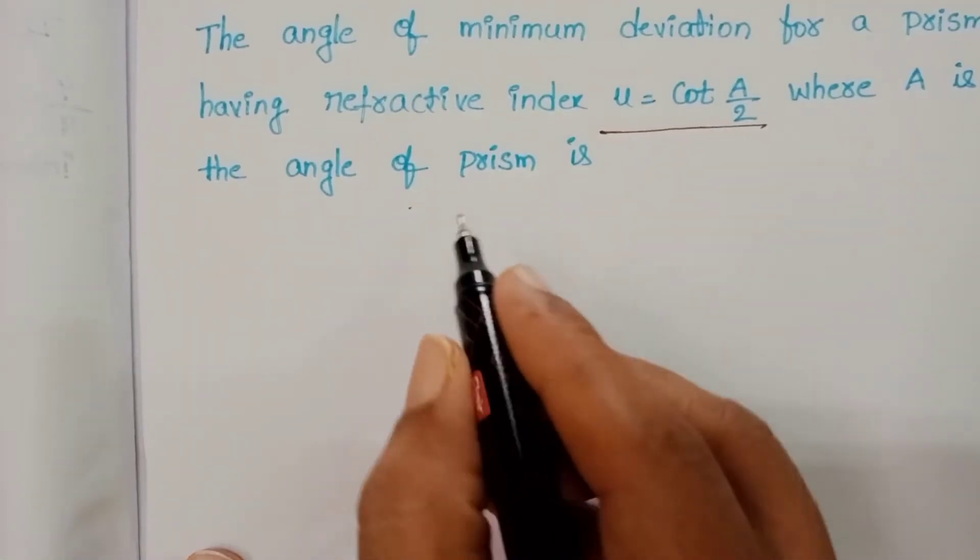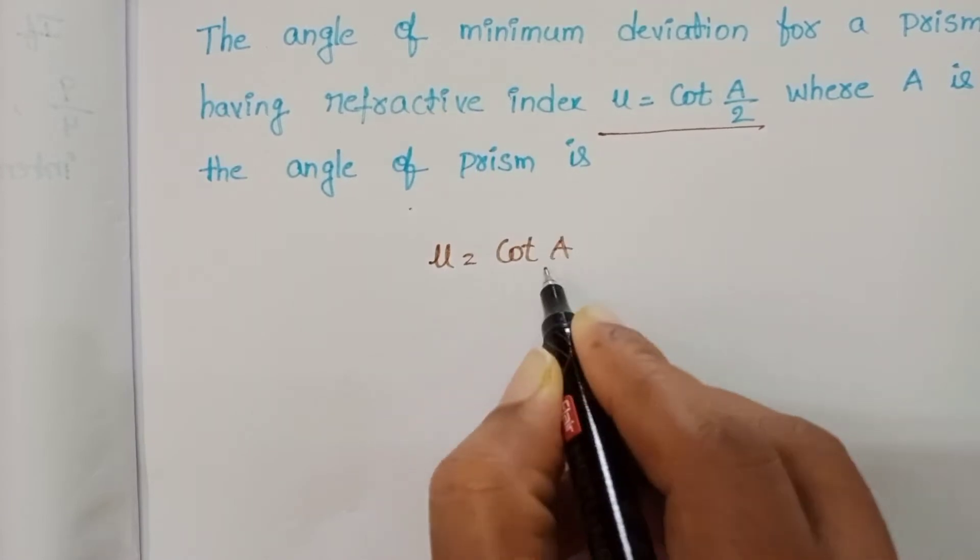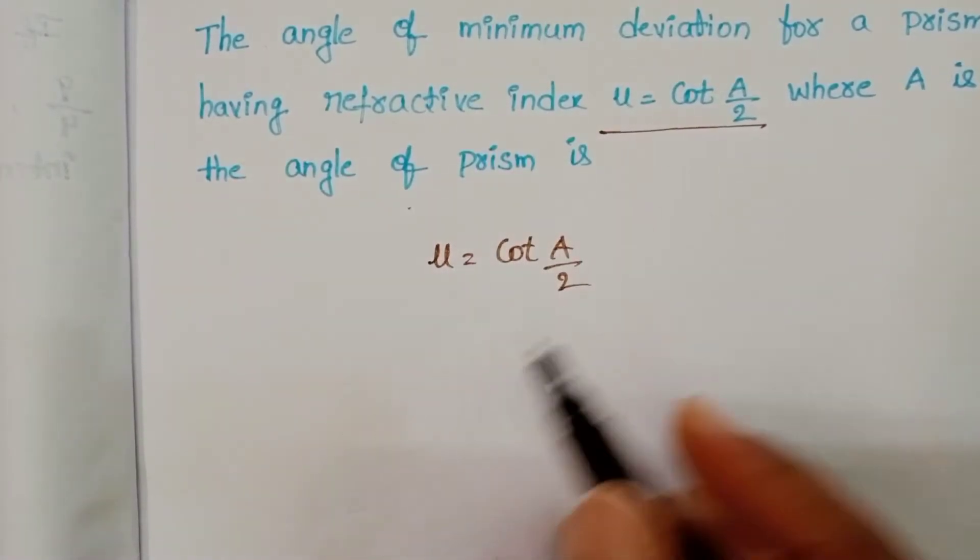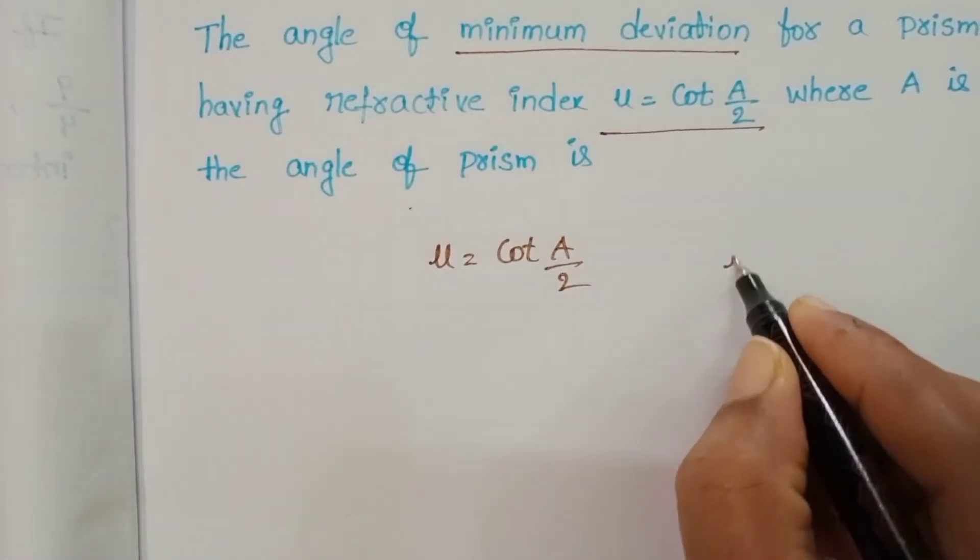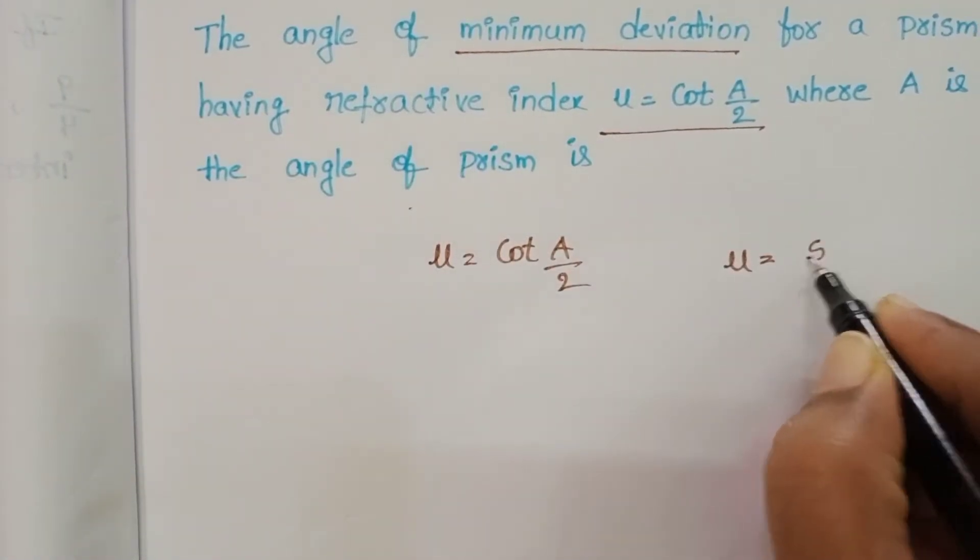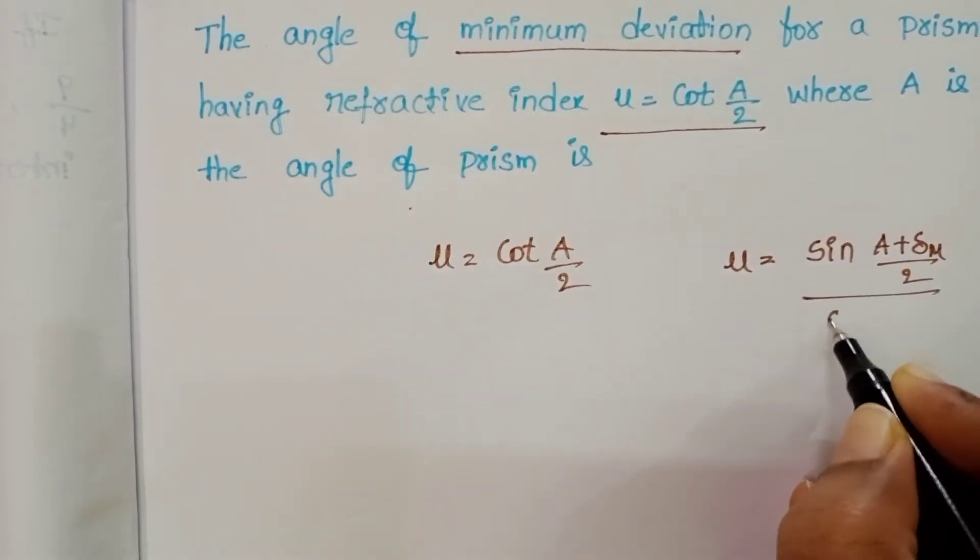Given: refractive index of prism mu equals cot A/2. We have to find out the minimum deviation. We know the refractive index of a prism formula: mu equals sin((A + δm)/2) divided by sin(A/2).